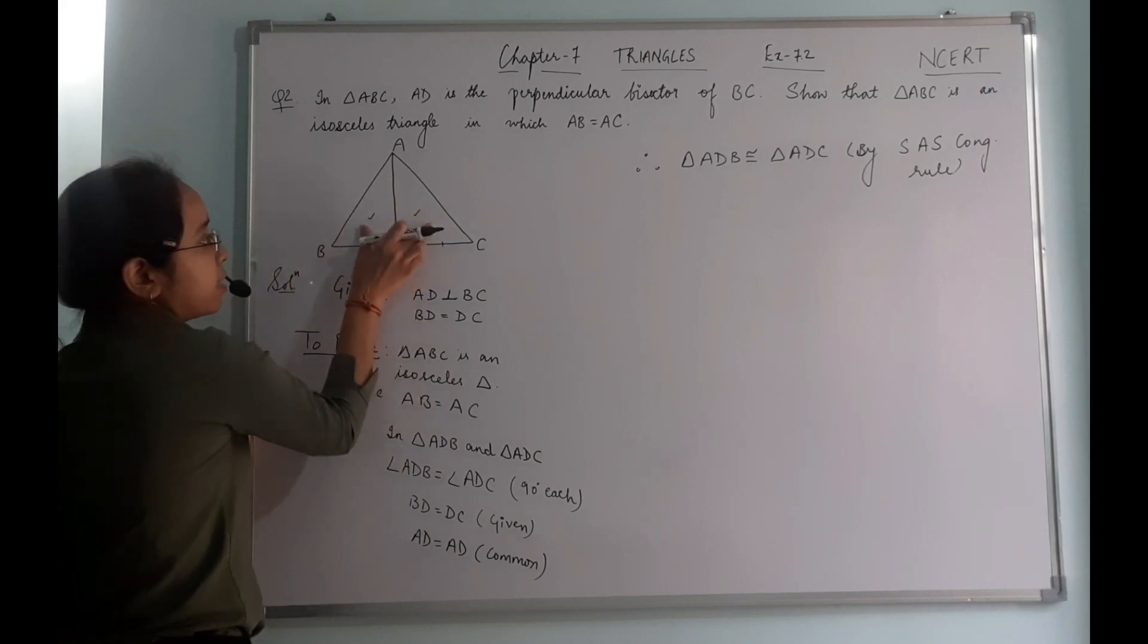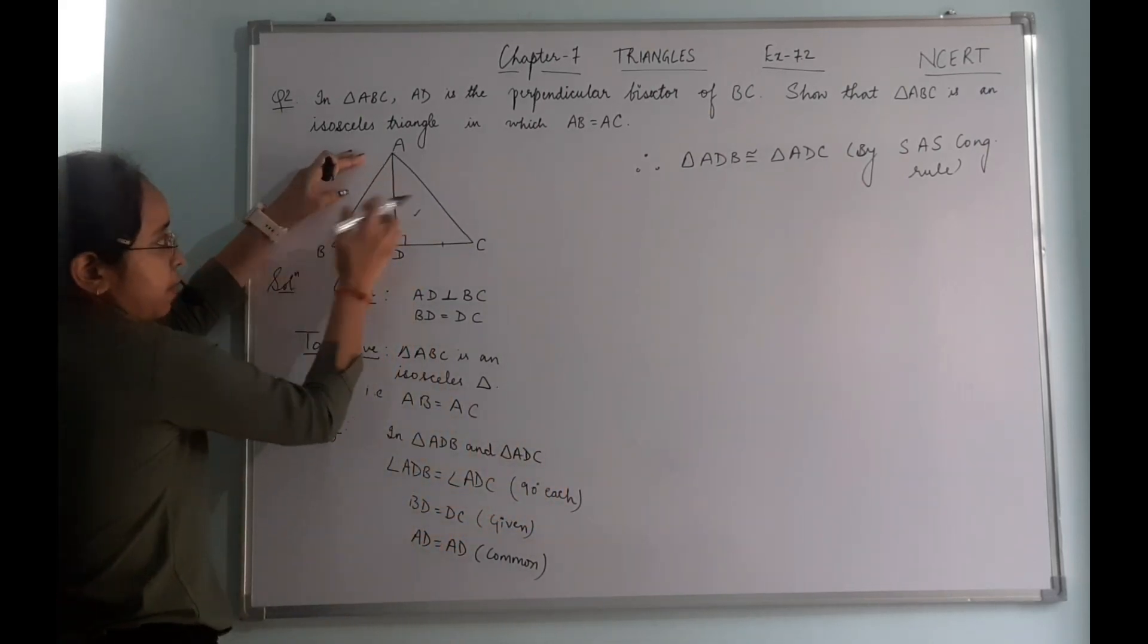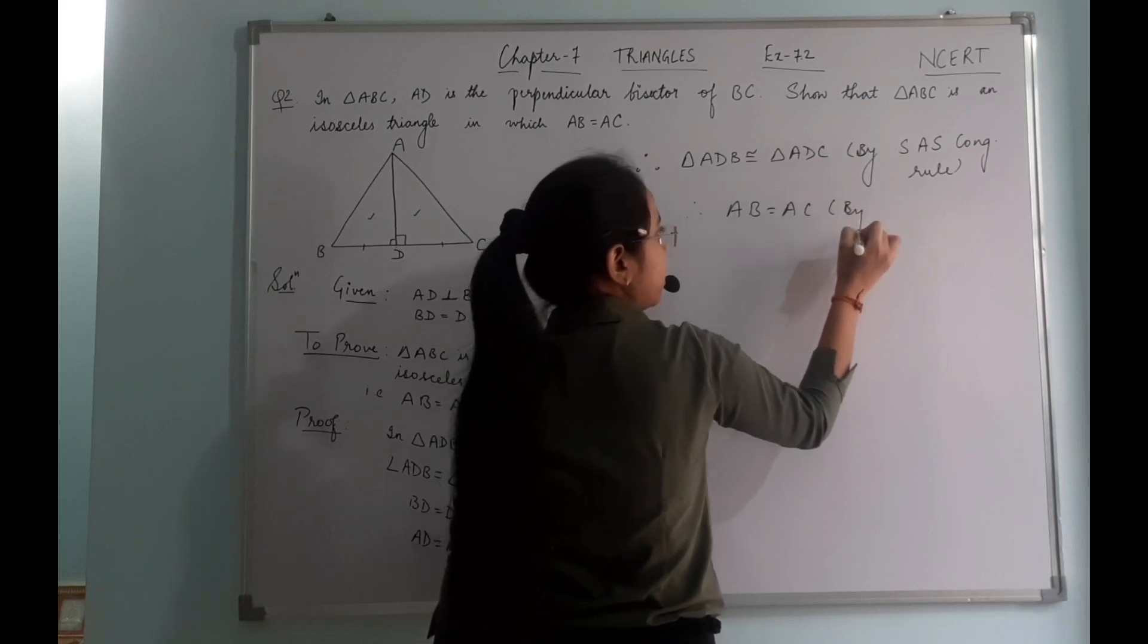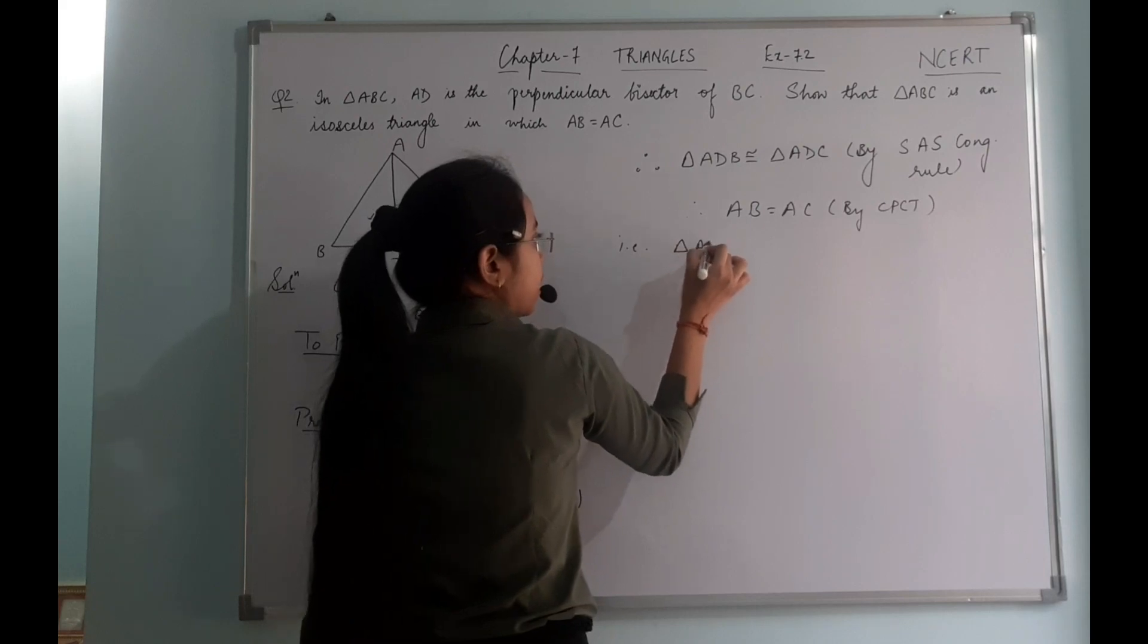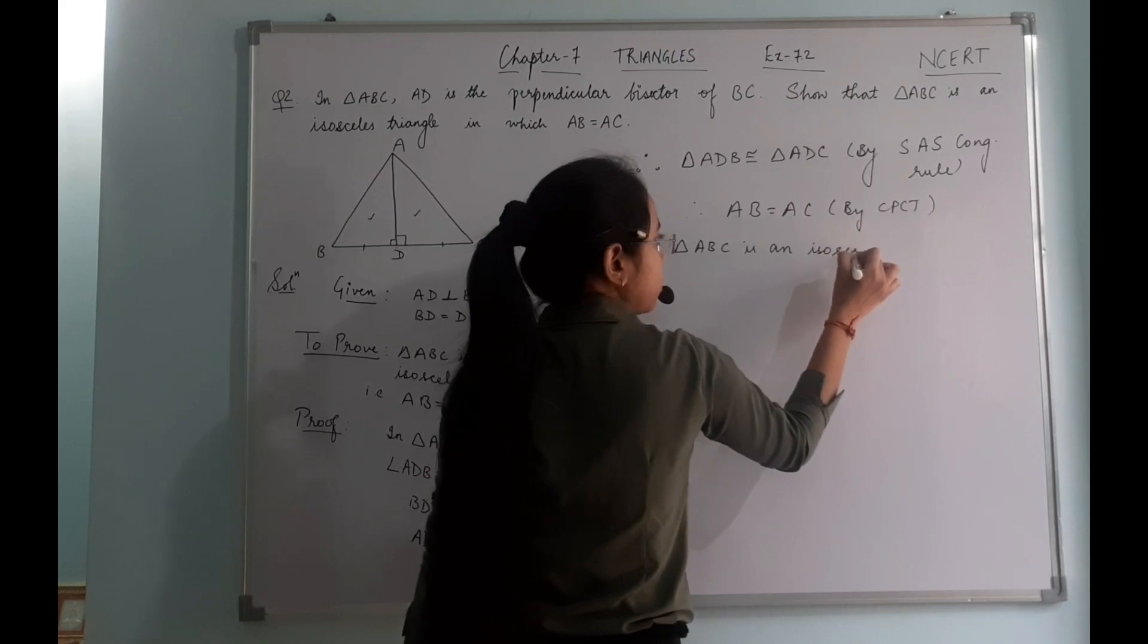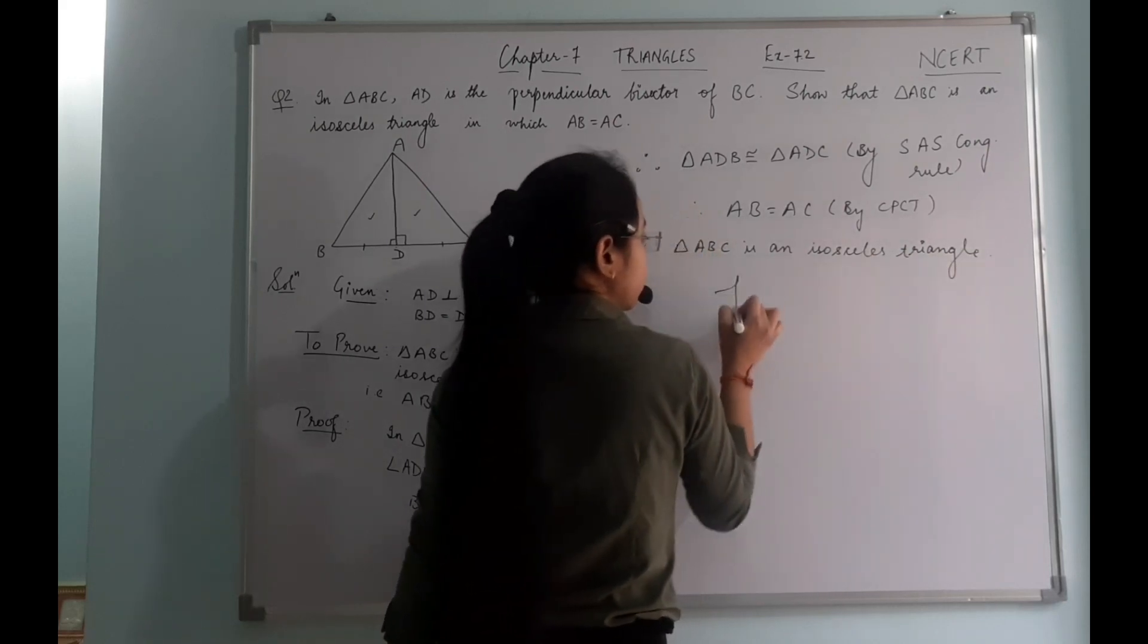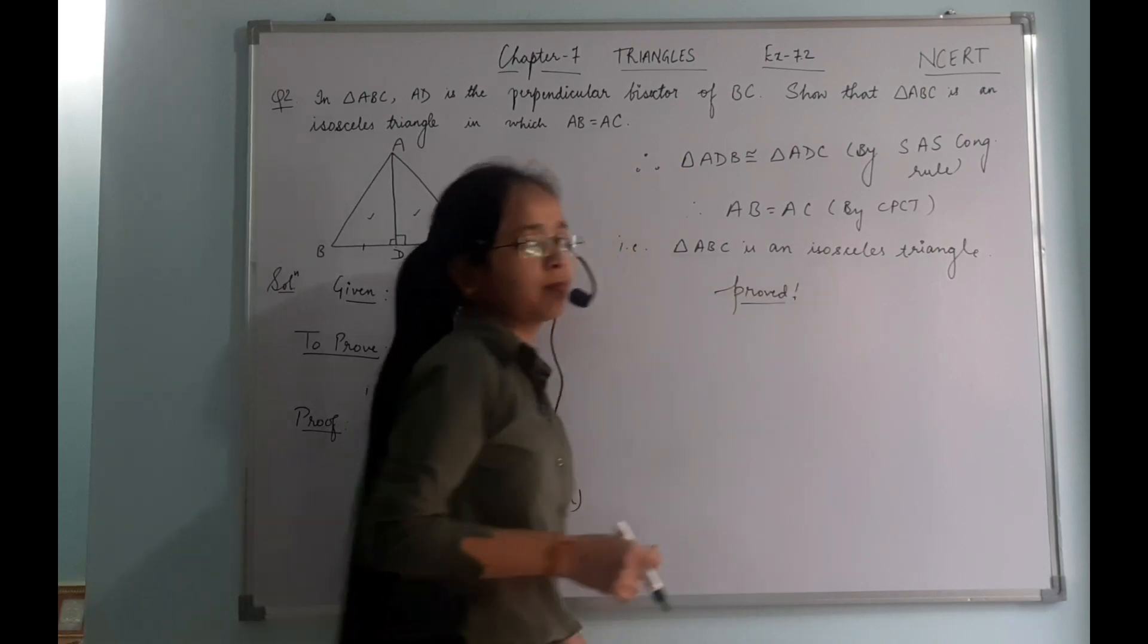Now since both of these triangles are congruent, we can prove their corresponding parts as equal. Therefore AB equals AC by CPCT. That is, triangle ABC is an isosceles triangle. Proved. Thank you.